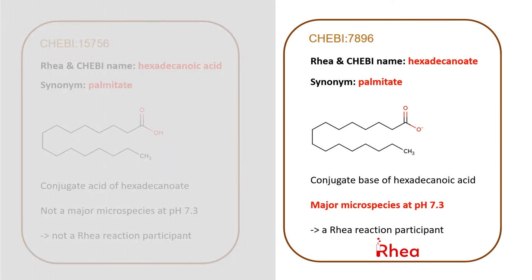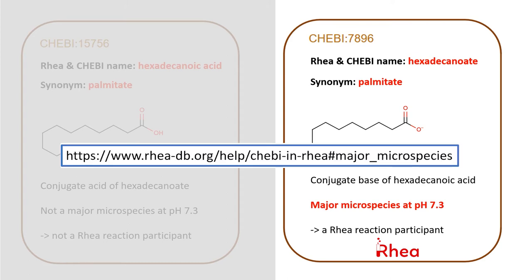Hexadecanoate, but not hexadecanoic acid, is used as a reaction participant at pH 7.3. You can find out more about these concepts in our help pages.